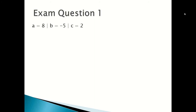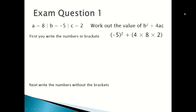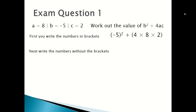Now we're going to look at the first exam question. Here are the values: a equals 8, b equals minus 5, and c equals 2. Work out the value of b squared plus 4ac. First, you write the numbers in brackets, so it would be minus 5 in brackets squared plus 4 times 8 times 2. Next, you expand the brackets.